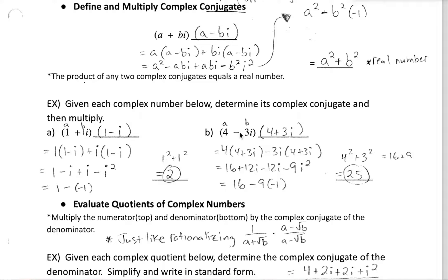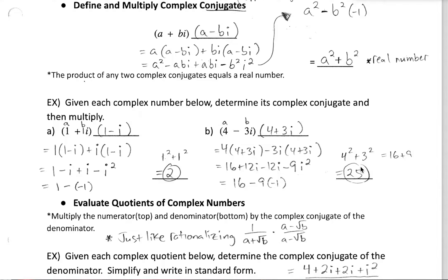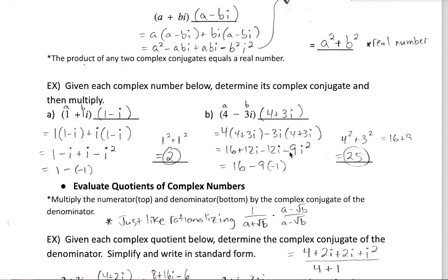Now with 4 minus 3i: the conjugate is 4 plus 3i. Multiplying the conjugates, we use the shortcut: a squared plus b squared, where a is 4 and b is 3. So 4 squared plus 3 squared is 16 plus 9, which equals 25. You can verify with the long way if you wish, but you'll get the same result.